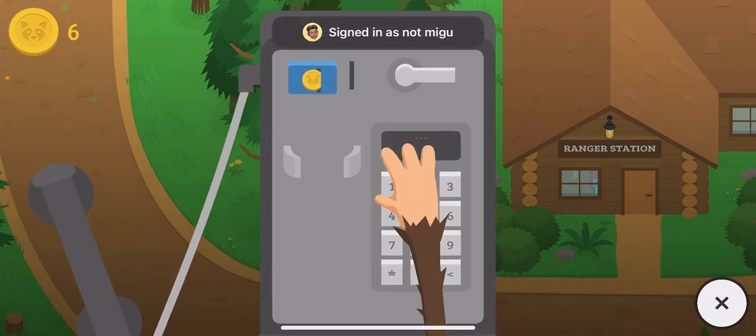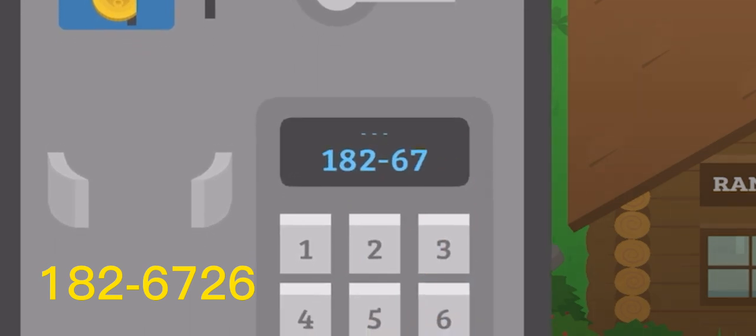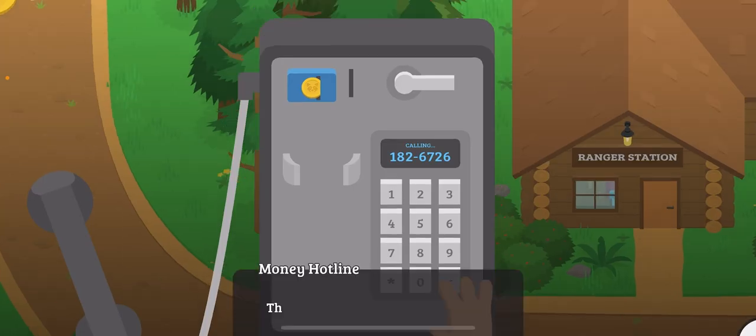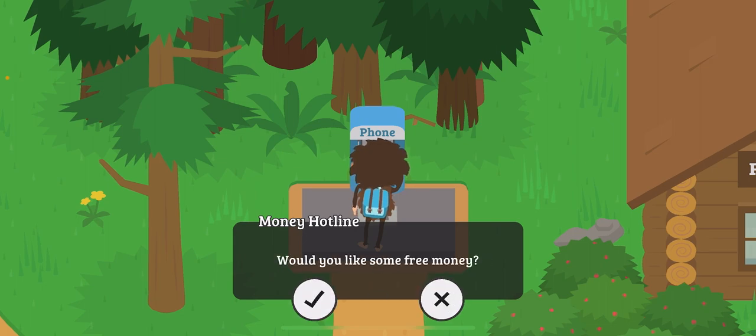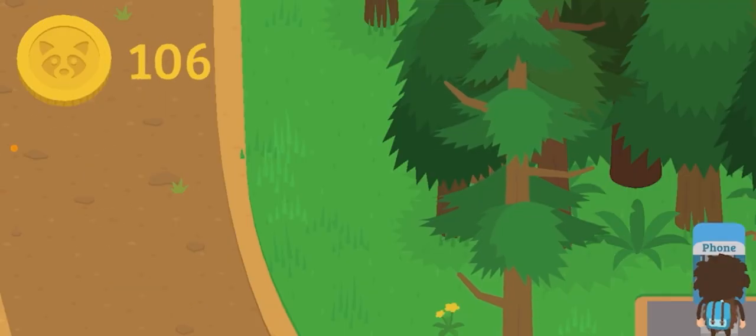The first number is 1826726. You say yes to the free money and you will automatically get some free money.